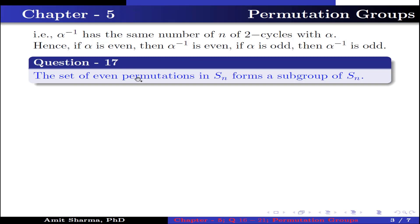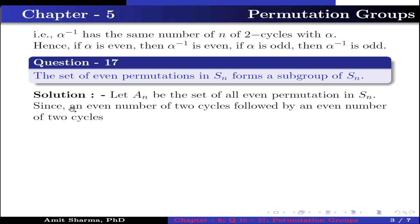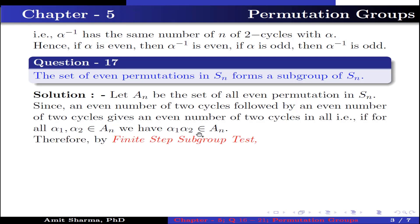Question number 17. The set of even permutations in Sₙ forms a subgroup of Sₙ. Let Aₙ be the set of all even permutations in Sₙ. Since an even number of 2-cycles followed by an even number of 2-cycles gives an even number of 2-cycles in all, that is, if α₁, α₂ belongs to Aₙ, we have α₁α₂ belongs to Aₙ. Therefore, by finite step subgroup test, Aₙ is a subgroup of Sₙ. This group is known as the alternating group.